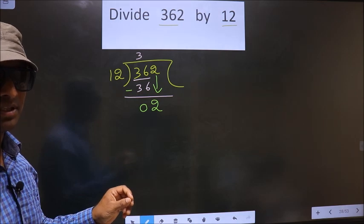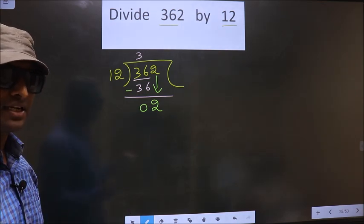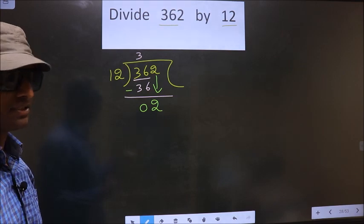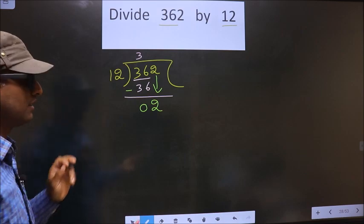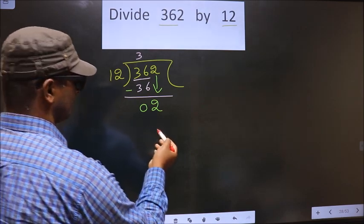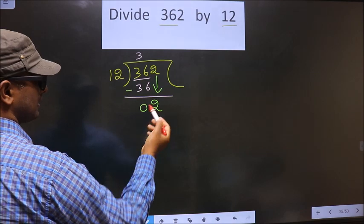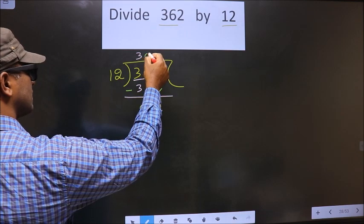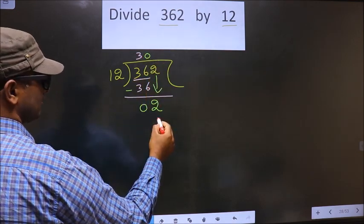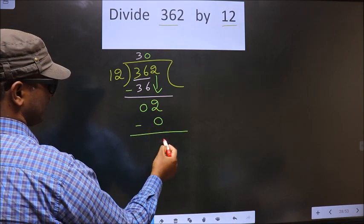Instead, what you should think of is: to this number, what should you multiply to get a number here? If we multiply by 1, we get 12. 12 is larger than 2, so what we do is we multiply by 0. 12 into 0 is 0. So now you subtract, you get 2.